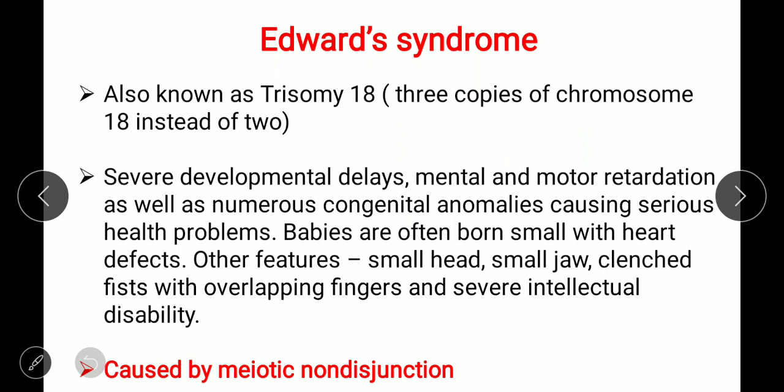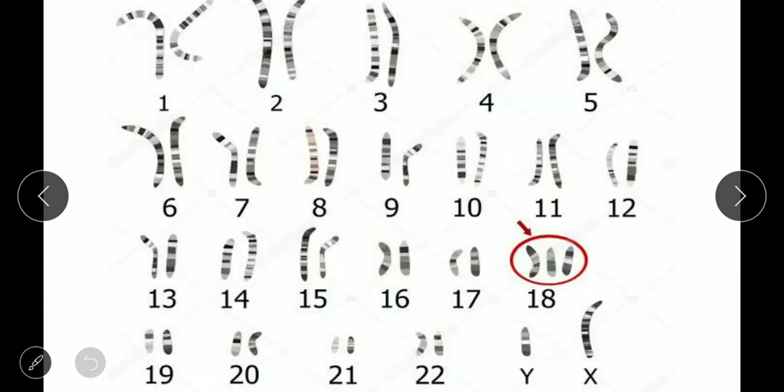During cell division, at metaphase chromosomes align at the center of the cell, and at anaphase the spindle fibers cause chromosomes to segregate toward opposite poles. In non-disjunction, chromosomes fail to split properly — one side gets an extra chromosome and the other side is missing one. This non-disjunction during meiosis is the major cause of Edward syndrome.